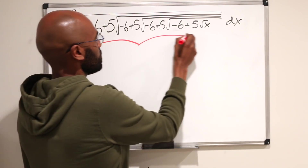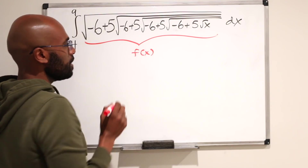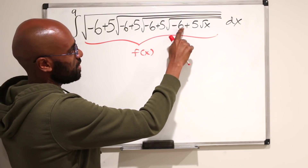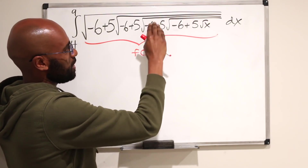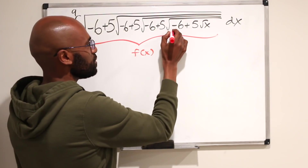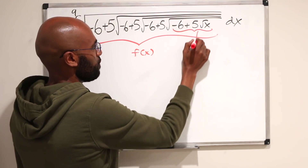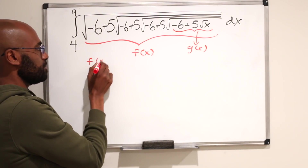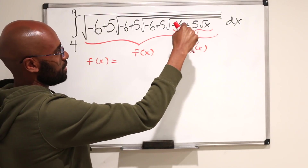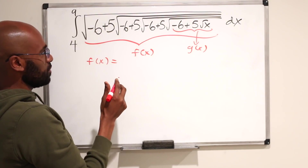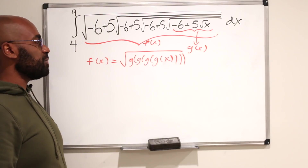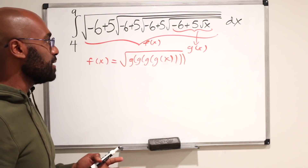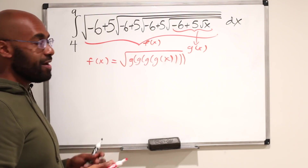To start, I'm gonna let this whole thing here be f of x. Now, you notice f of x has this repeating property going on — we have this function negative 6 plus 5 root x, and it seems like we're applying it again and again. So what I'll do is let this piece of the function right over here be g of x. Then f of x can be represented in terms of g of x as g applied to itself a couple of times and then taking a square root. So explicitly, f of x is the square root of g of g of g of g of x.